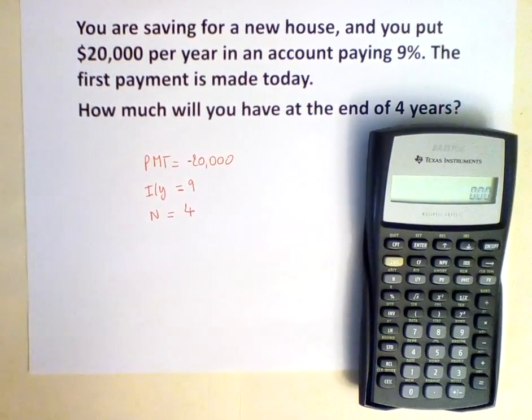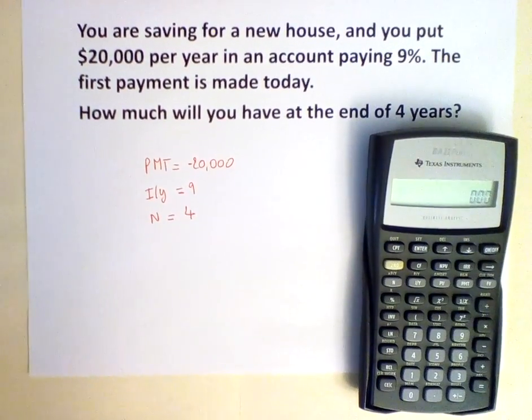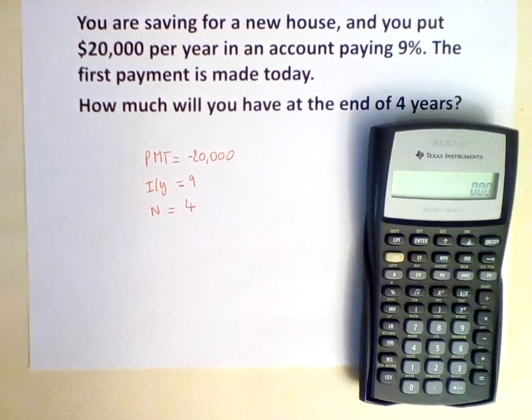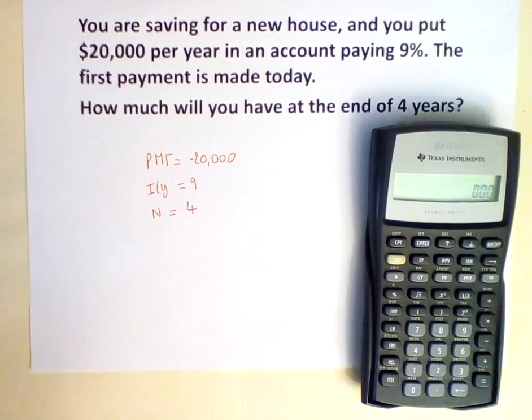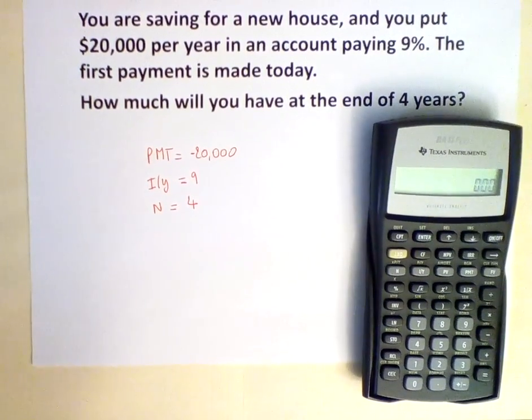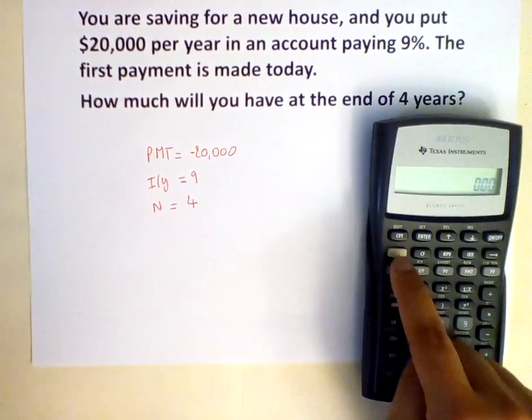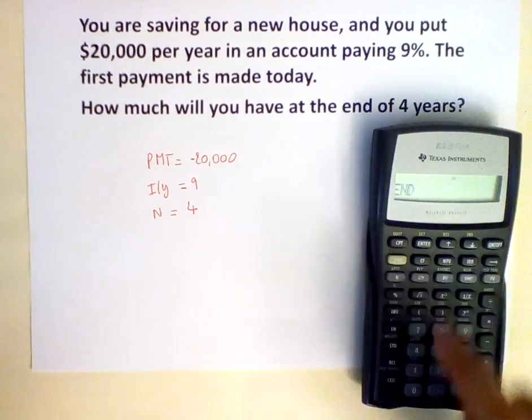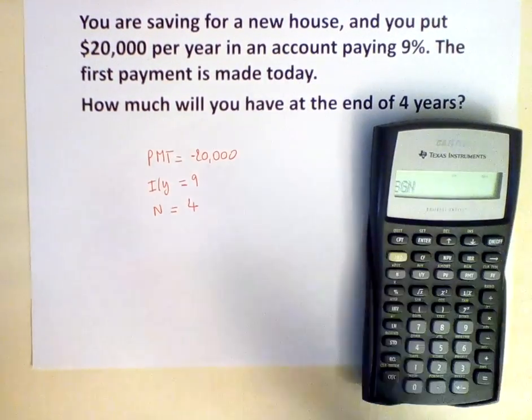In order to solve for the annuity due, we need to set the financial calculator to begin mode. To do so, you hit second, PMT, second, enter.